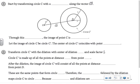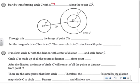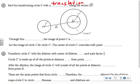Start by transforming circle C with a translation along the vector CD. When I take this circle and move it along that vector, you see there's a circle inside of circle D. Through this transformation, the image of point C is D. We're letting the image of circle C be circle C prime - you see that red circle I have in there. The center of circle C prime coincides with point D.